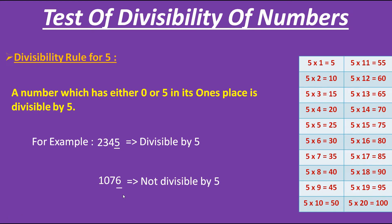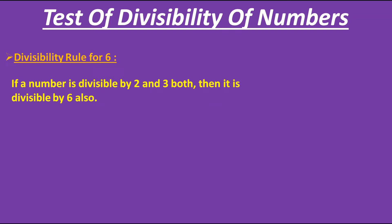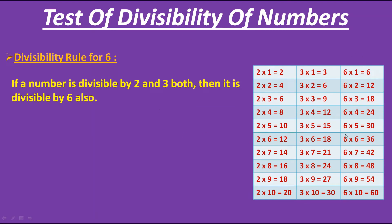Now let's move to the next divisibility rule, that is for 6. It says that if a number is divisible by both 2 and 3, then it is divisible by 6 also. So to check whether a number is divisible by 6, we have to check first that it is divisible by both 2 and 3. Why is the rule this way? Because if we check the tables of 2, 3 and 6, all the multiples of 6 are also multiples of 2 and 3. If you extend these tables, you will find all multiples of 6 in the tables of 2 and 3.